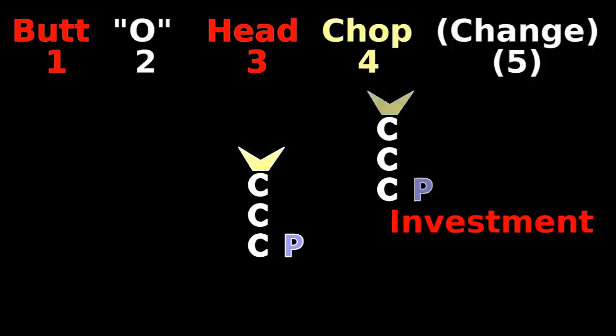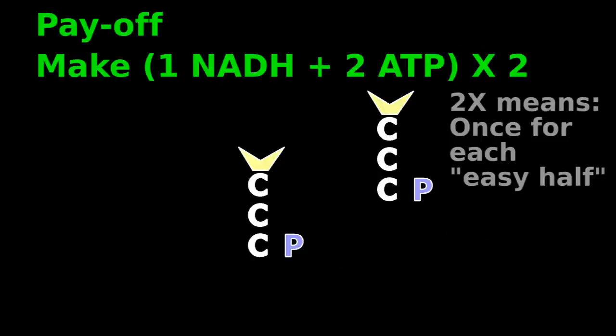So we committed and chopped and changed, so we now have 2 easy bottom halves. We're in the payoff phase where we make high energy bonds.